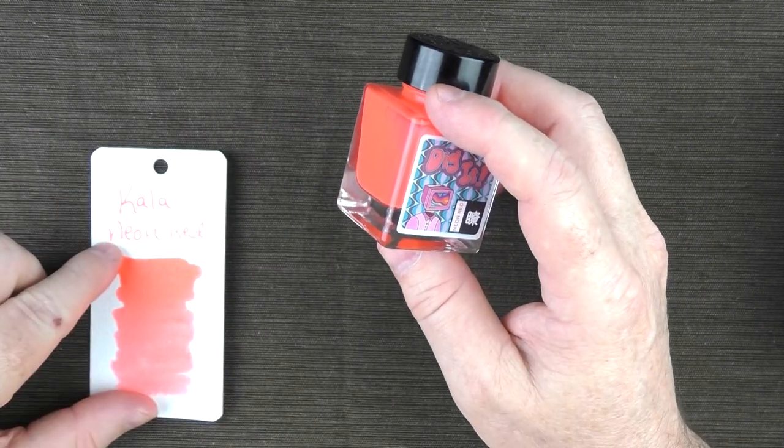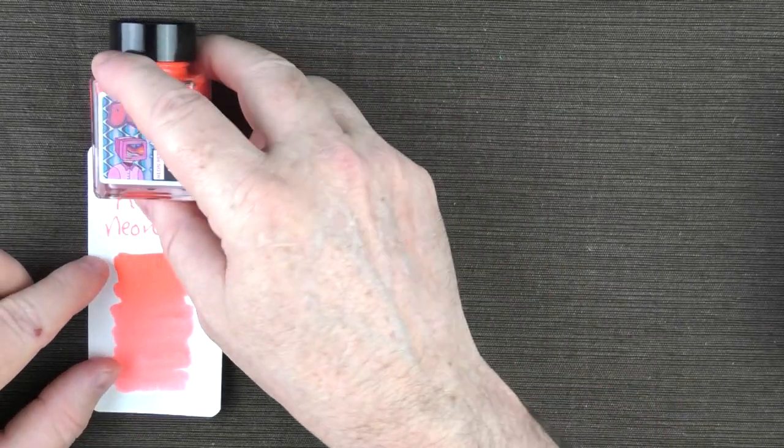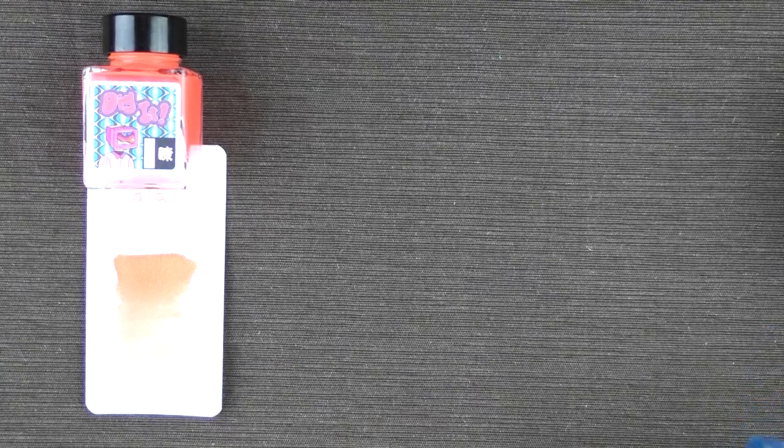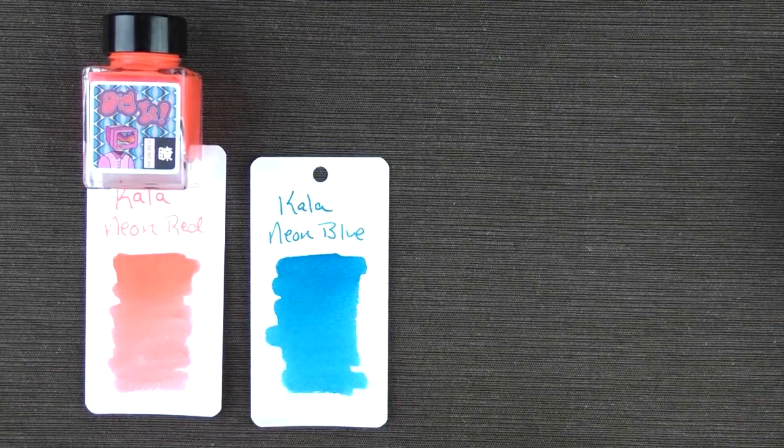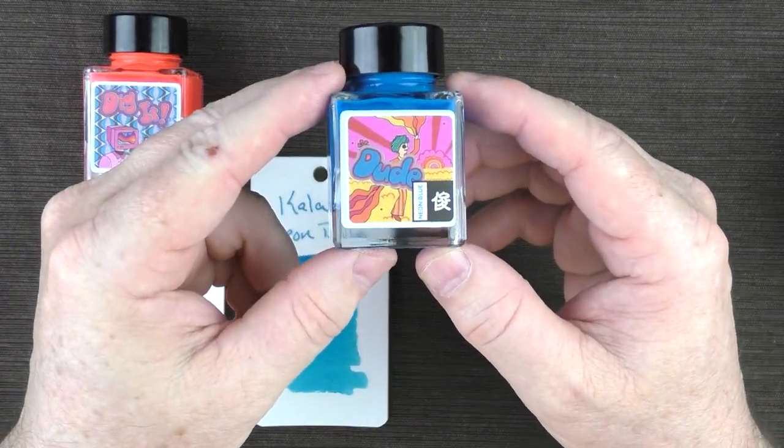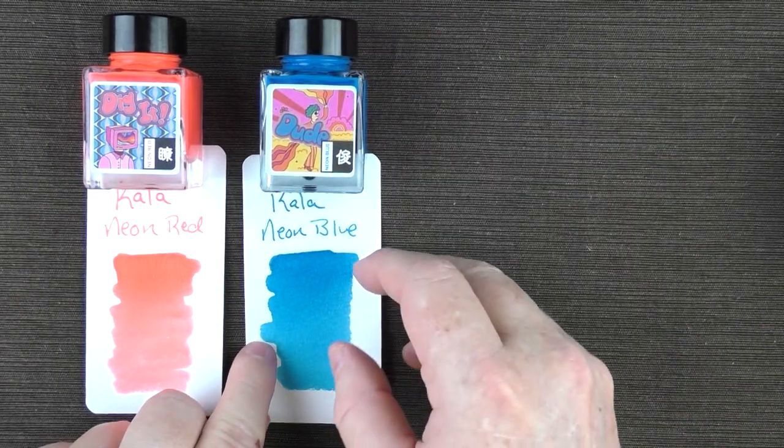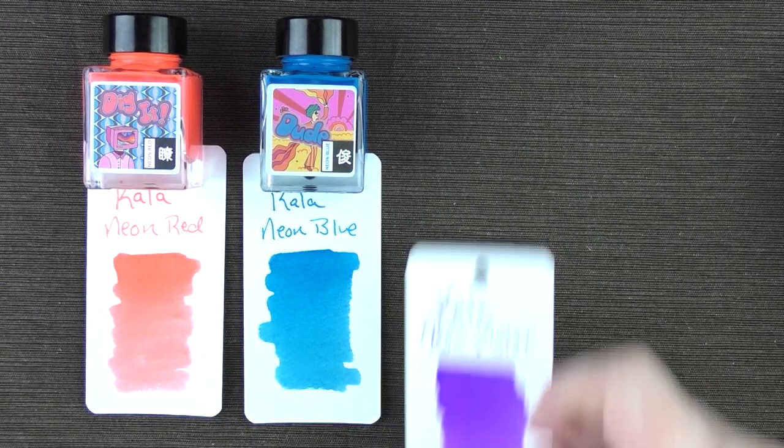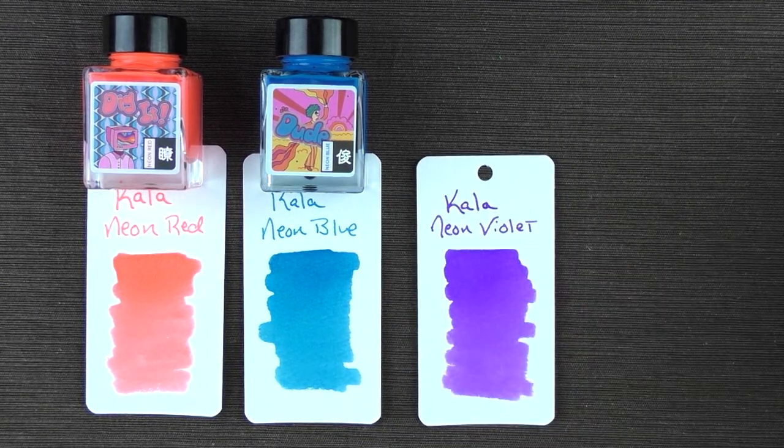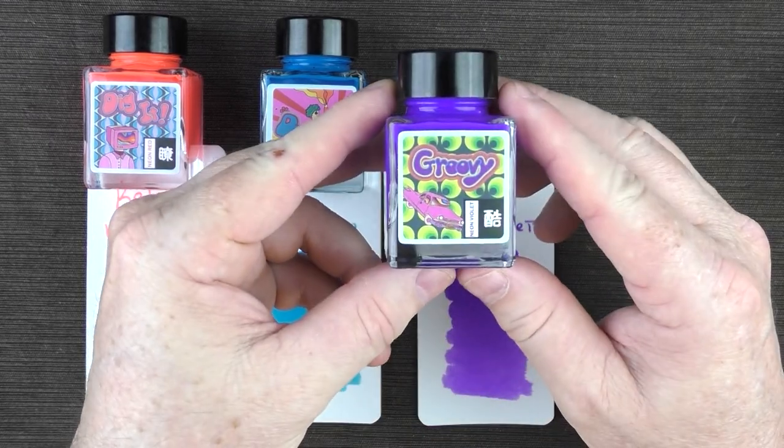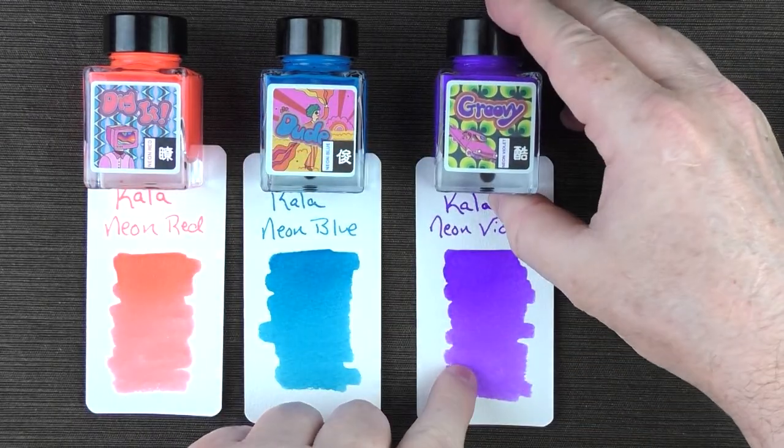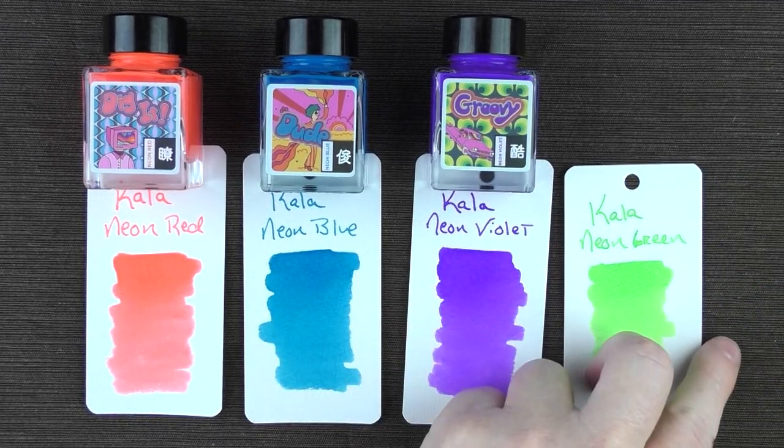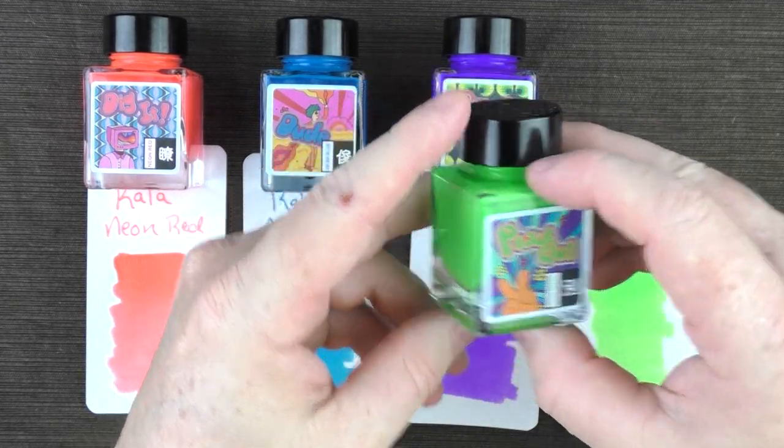And I would say that this neon red is really more of a coral and not a true red. And then next up we have the neon blue and the neon blue is called Dude. And I'd say this is one of the colors that's a little more subdued. It isn't quite as bright. Then next up we have the neon violet, which is called Groovy. And we have the neon green, which is called Peace Out.